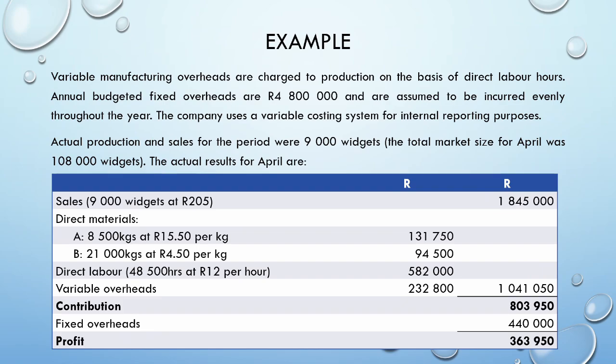Variable manufacturing overheads are charged to production on the basis of direct labor hours. Annual budgeted fixed overheads are 4.8 million rand and are assumed to be incurred evenly throughout the year. The company uses a variable costing system for internal reporting purposes. We should have been able to pick this up already on the basis that our income statement had a contribution line and the fixed overheads did not form part of that contribution.